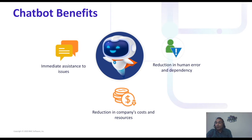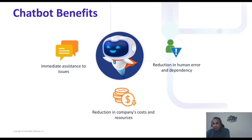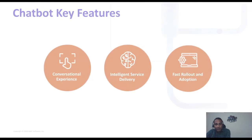There's no manual intervention, which leads to reduction in human errors and dependencies. When you have all of this, it leads to a reduction in the company's overall costs and the resources it uses to provide assistance to end users.